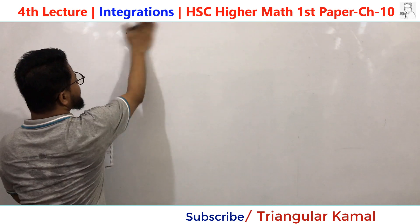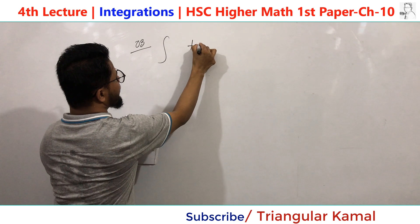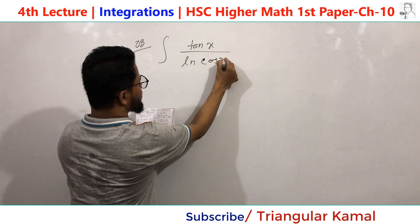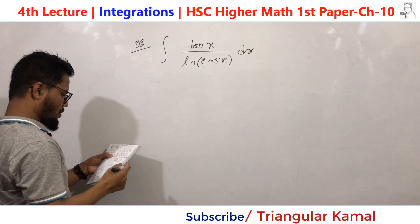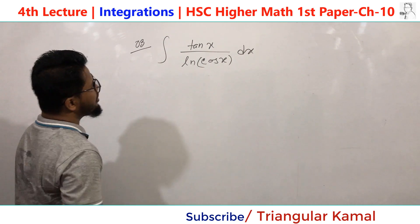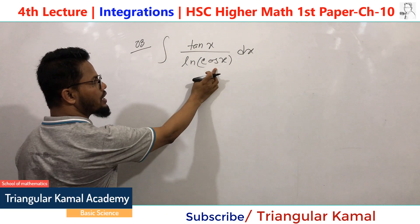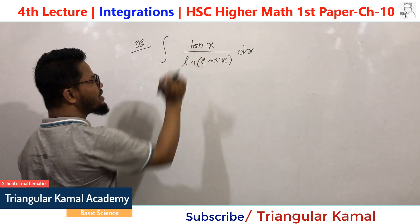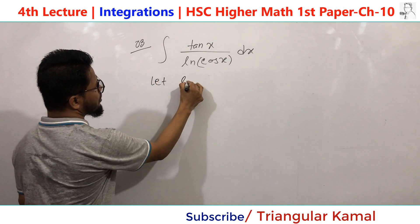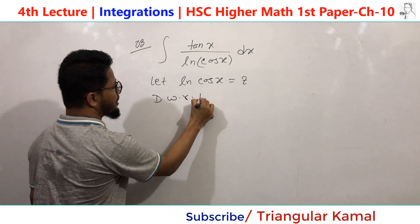Question number 3: integrate tan(x) · ln(cos(x)) dx. We can start from the ln(cos(x)) part because the differentiation of ln gives 1/x, and the derivative of cos(x) gives −sin(x), so we get −sin(x)/cos(x), which is −tan(x). That's how we will start from ln(cos(x)). Let z = ln(cos(x)). Differentiate with respect to x.